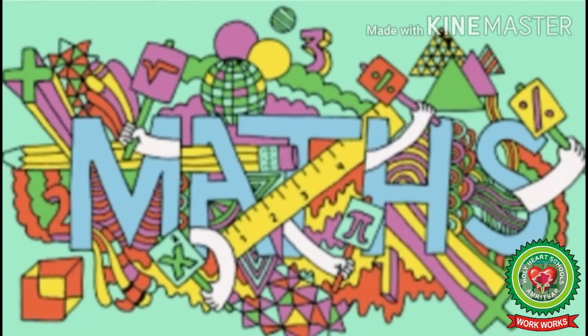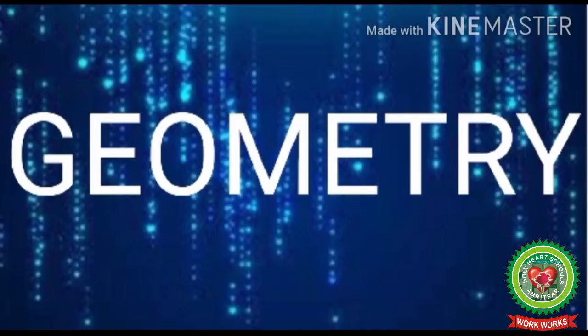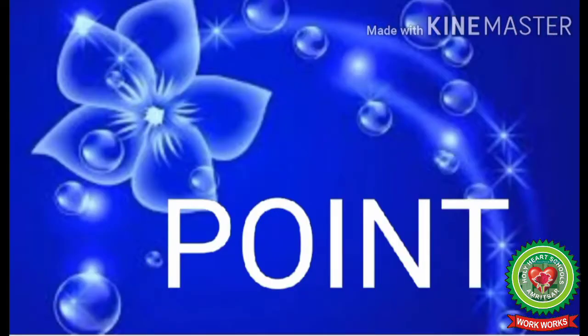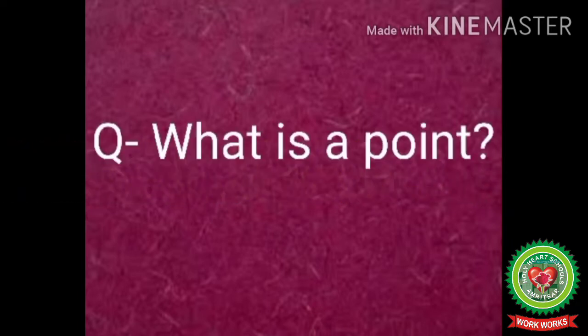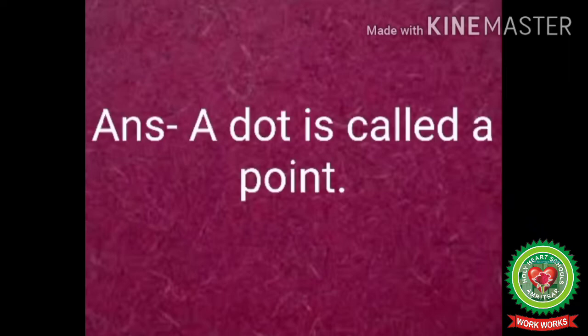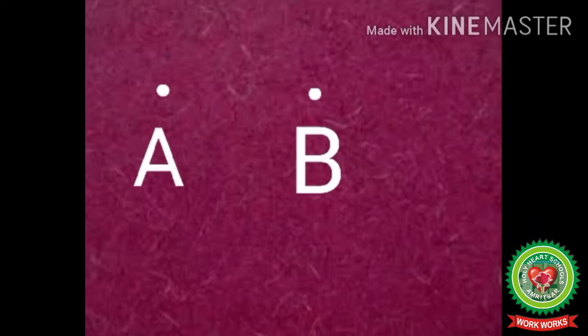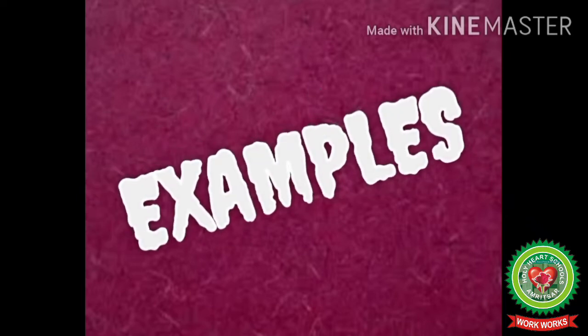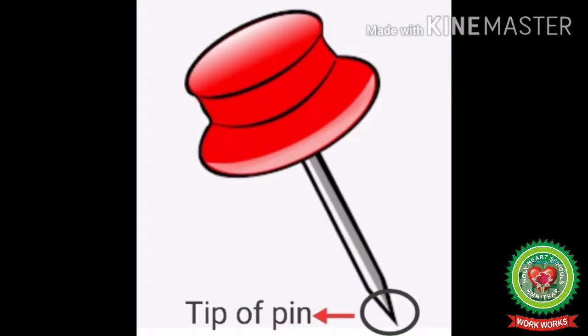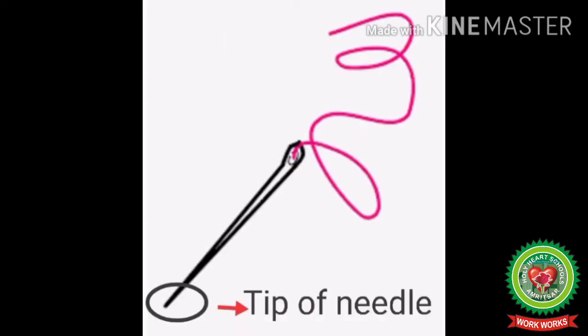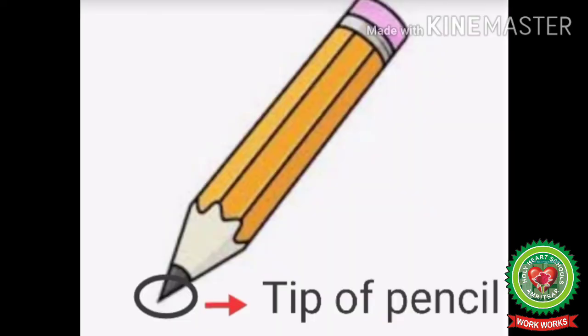Hello kids, welcome to the maths class. Today we will do a new topic from geometry — that is a point. The main objective of today's learning is to understand what is a point and how to draw and define a point on copy. Now first I will tell you what is a point. Children, what is this? This is a dot, and a dot is called a point. We can name it as point A and point B. Some examples of point are: tip of pen, tip of pin, tip of needle, tip of injection, and tip of pencil.